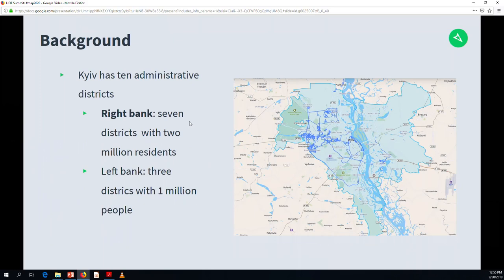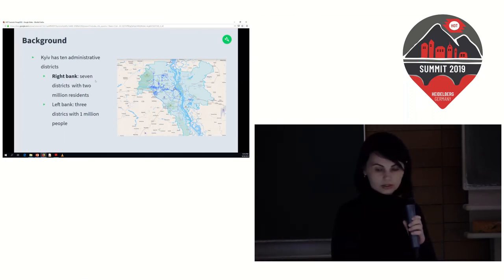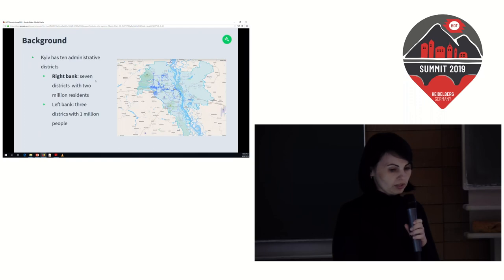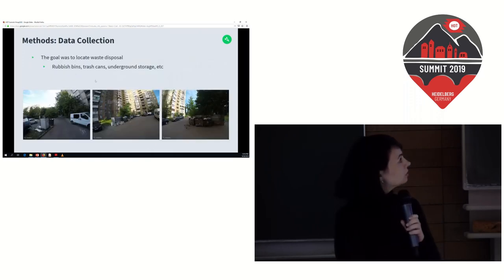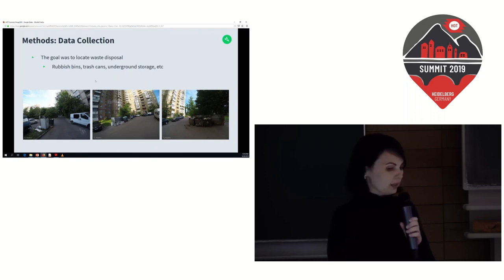8,500 houses are served, and more than 60% of waste is taken to landfills, about 25% to an incinerator for energy, and about 10% is recycled. Kyiv has 10 administrative districts, 7 on the right bank of the Dnieper and 3 on the left. For our project we took the right bank territory — seven districts inhabited by 2 million people — collecting data and identifying waste disposal based on Mapillary's street-level imagery platform. When we opened OSM, we found there was much work to do, so we created the project 'Waste Control.'